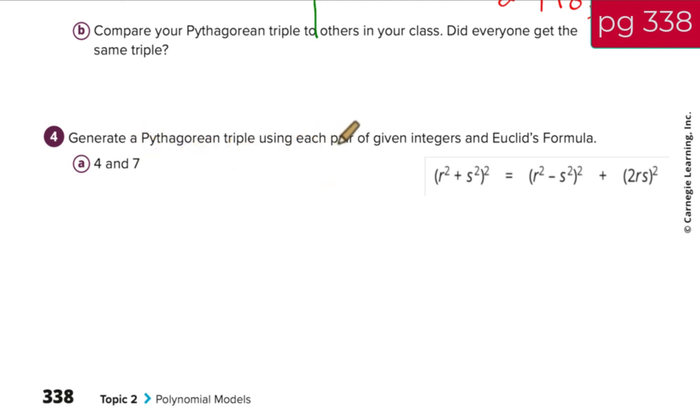It says, generate a Pythagorean triple using each pair of given integers. So they give you these two integers. They want you to generate a Pythagorean triple. So I'm going to write down this amazing formula. And remember, the larger number is r. And you always remember, because this piece right here, you're going to subtract s from r. So r's got to be bigger. So we're going to make the 7 the r, and then we'll make the 4 the s. So let's get it all set up here. We get 7 squared plus 4 squared quantity squared should equal 7 squared minus 4 squared quantity squared plus 2 times 7 times 4.